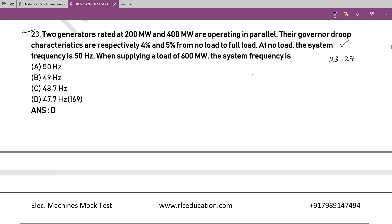Question 23: There are two generator systems — 200 MW and 400 MW — both operating in parallel, each having individual governor droop characteristics of 4% and 5% respectively. The no-load frequency of the system is 50 Hz and the total system load is 600 MW. We need to find the final system frequency. When the system is unloaded, frequency f₀ = 50 Hz. The final frequency is f₀ minus the change in frequency due to loading.